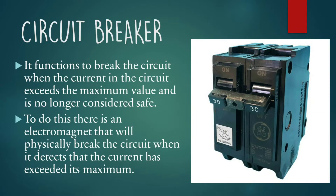Circuit breaker: it functions to break the circuit when the current in the circuit exceeds the maximum volume and is no longer considered safe. To do this, there is an electromagnet that will physically break the circuit when it detects the current has exceeded its maximum.